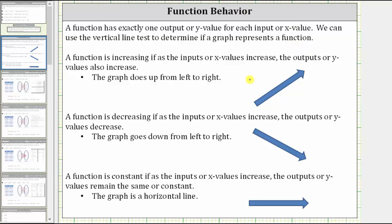For the behavior of a function: a function is increasing if, as the inputs or x values increase, the outputs or y values also increase, which means the graph goes up from left to right. A function is decreasing if the inputs or x values increase but the outputs or y values decrease, which means the graph goes down from left to right. Finally, a function is constant if, as the inputs or x values increase, the outputs or y values remain the same or constant — the graph would be a horizontal line.